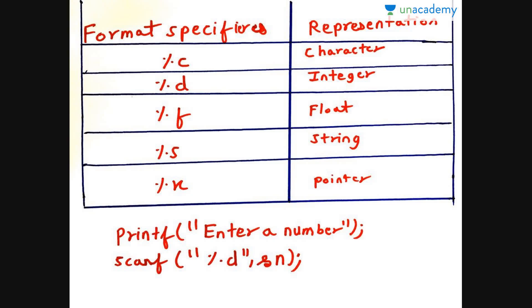Whereas %f will be for float. %s will be for string. You can see their first letters match. Only the difference is %x which is used for the pointer.